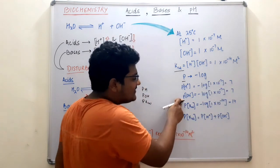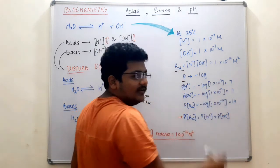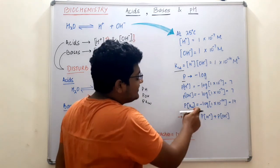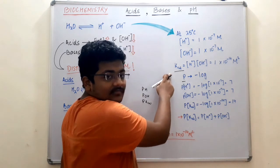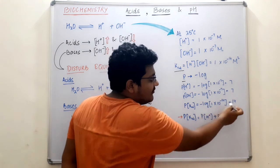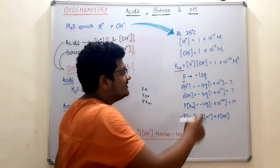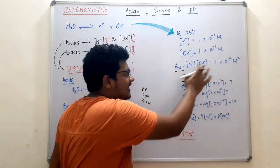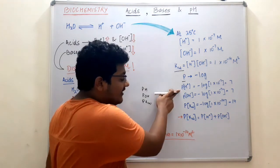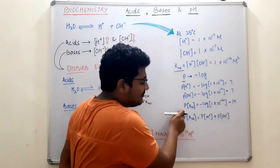pOH is the negative log of the hydroxide ion concentration, which is 1 × 10⁻⁷, so pOH also equals 7. pKw is the negative log of Kw, which comes out to be 14. When taking log, we do not consider the units — so the pH is just 7 with no unit, pOH is 7, and pKw is 14.